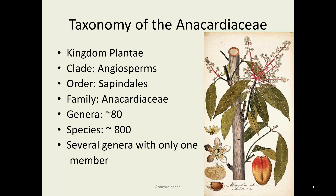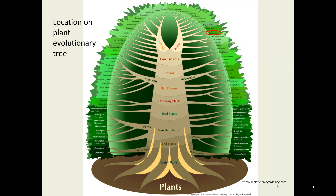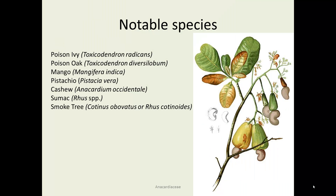The drawing on the right is a mango. For our tree of life, we're in the Sapindales, in the rosid group of evolutionarily advanced plants. Notable species include poison ivy and poison oak, both Toxicodendron species. Mango, pistachio, and cashew are three different genera, all important in this family. Sumac are the rosid species, and smoke tree is known as Cotinus obovatus.